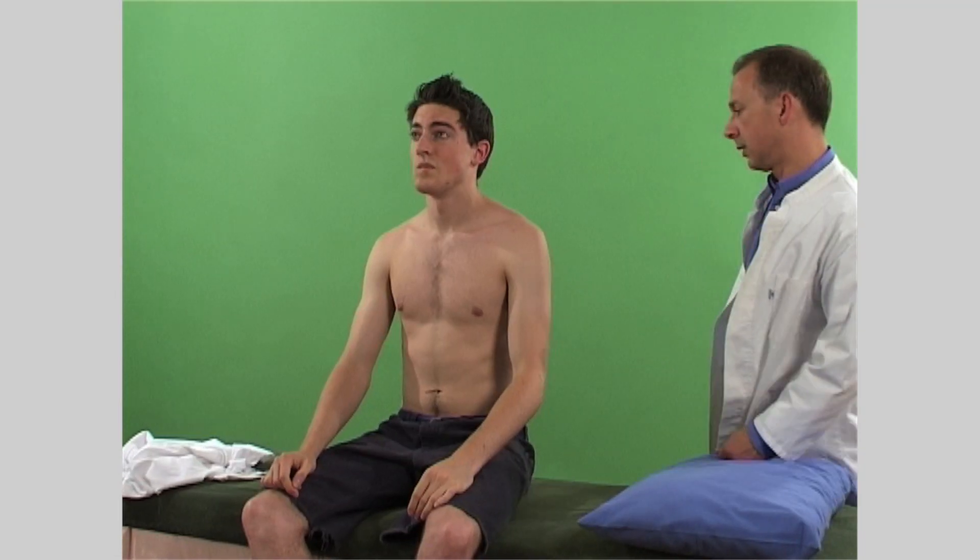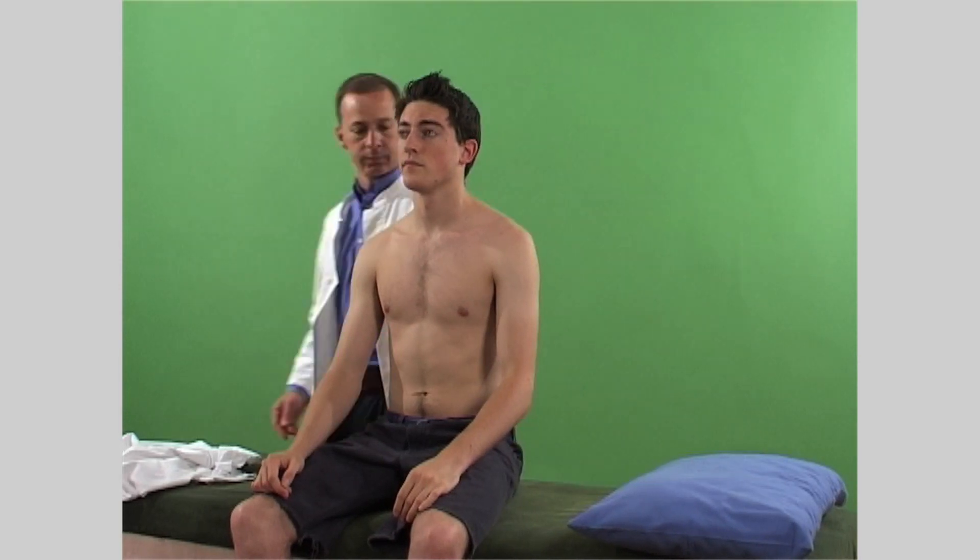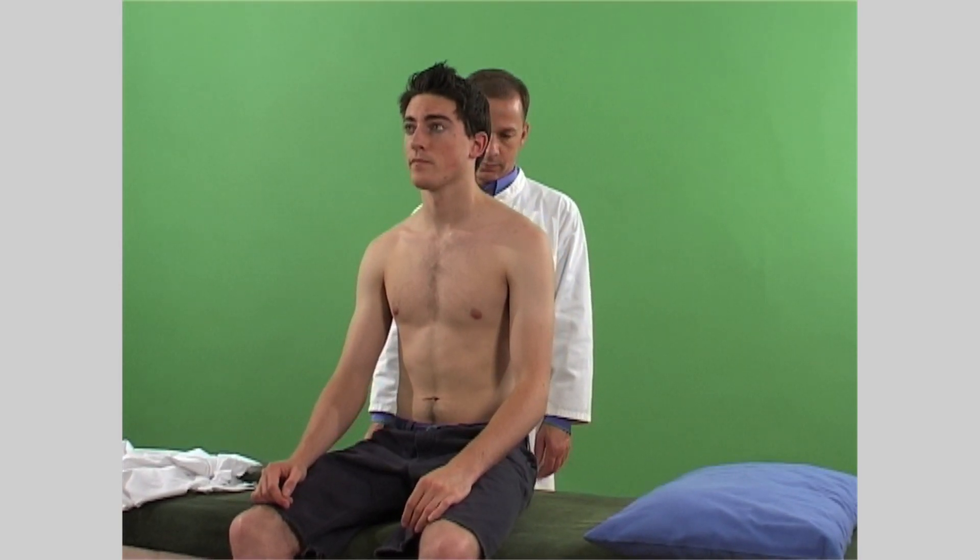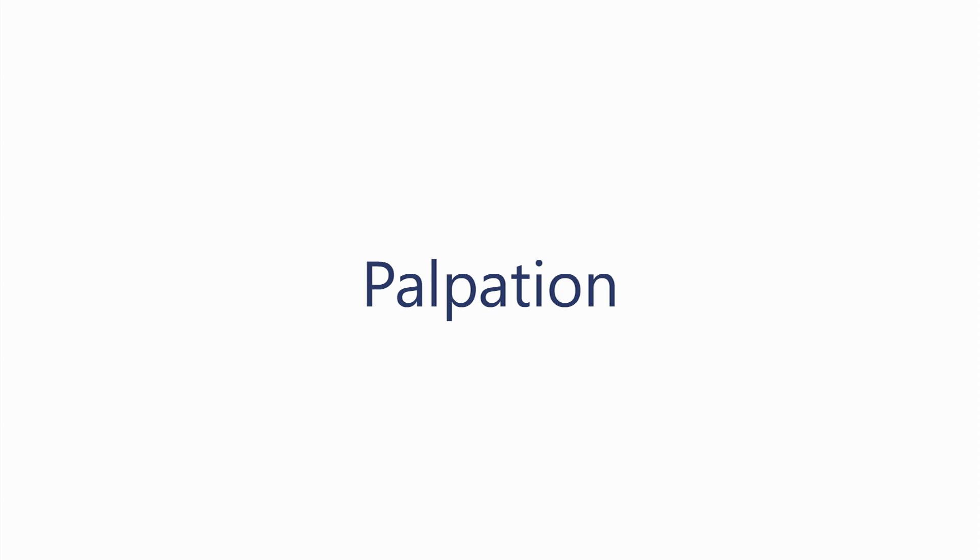Let us begin the examination of the cervical spine with a general inspection of the neck. As emphasized earlier, the general guidelines for observation and palpation will not be repeated for each section, but you must ensure that you include these in your examination procedure. Observe the cervical curvature, noting increased or decreased lordosis, or if the head is held in side flexion or in a forward posture. Note any evidence of congenital abnormality like Klippel-Feil syndrome or Sprengel's shoulder. Consider the association between the cervical spine and any postural abnormality of the shoulder girdle or the thoracic spine.